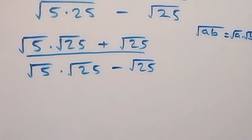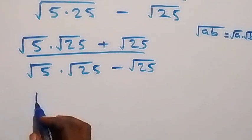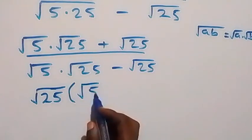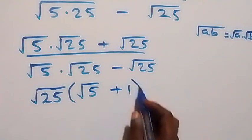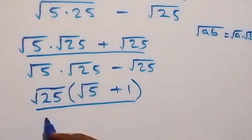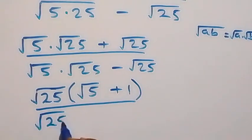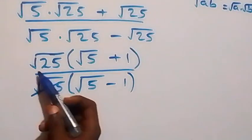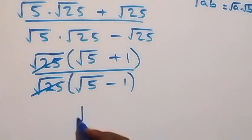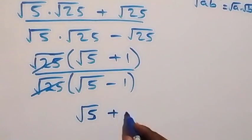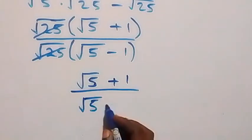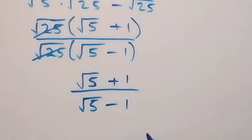From what we have here, let's factor root 25 out. Up here we have root 25, into bracket — we are left with root 5 then plus 1. Also divided by here, we also factor root 25 out, then we are left with root 5 minus 1. Then here root 25 cancels out, giving us root 5 plus 1 divided by root 5 minus 1.